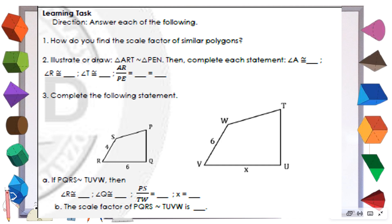For number two, you have to illustrate first the two triangles ART and PEN. You're going to be given triangle ART and triangle PEN. Given these two triangles, we're going to complete the statement. We're going to give tick marks to identify which angles are congruent.